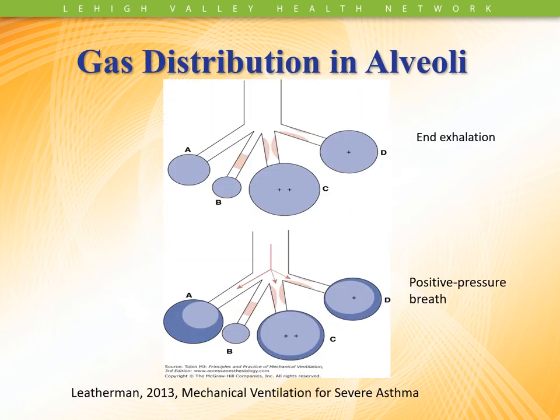When you look at gas distribution in the alveoli, you can see gas can come in. At the end of exhalation, you have gas trapped, and then the next positive pressure breath comes in and you really can't get ventilation in because you have this mucus plugging and these obstructed airways. So the gas can't come in to improve gas exchange, and the gas can't come out in order to get rid of CO2.